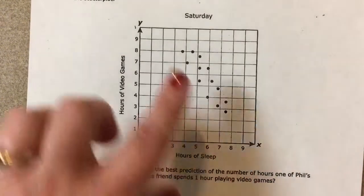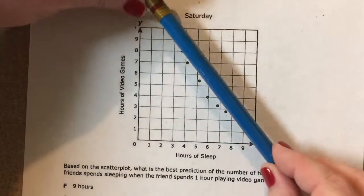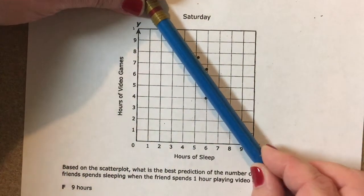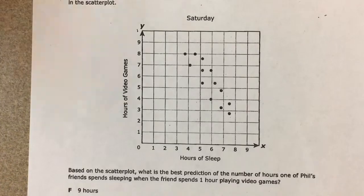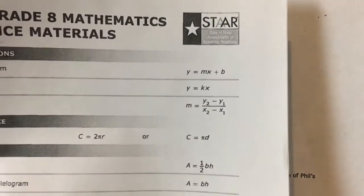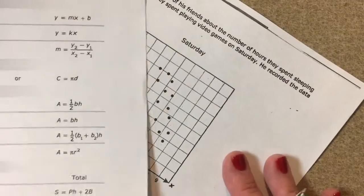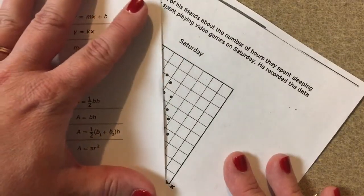The way you work with a scatter plot is you have to draw your line of best fit. If you put your pencil down on the dots, you want to cover up most of the dots — that's where your line is going to be. You want about half the dots above and about half the dots below.